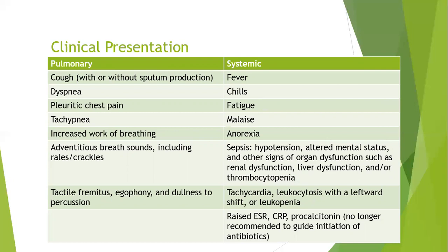The clinical presentation of pneumonia can be divided into pulmonary and systemic symptoms. Major pulmonary symptoms are cough — with or without sputum production — dyspnea, and pleuritic chest pain. Signs include tachypnea with increased work of breathing. On examination, you may find additional breath sounds like rales, crackles, and sometimes wheezes, especially in asthmatic patients. There would also be tactile fremitus, dullness to percussion, and changes in auscultatory sounds like egophony.